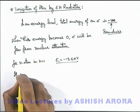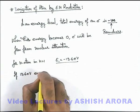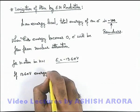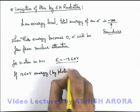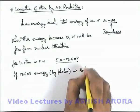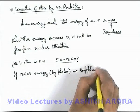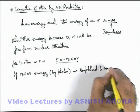So here we can say if 13.6 electron volt energy, here we can talk by a photon, is supplied to hydrogen atom.